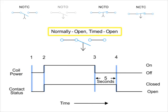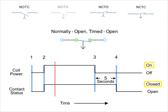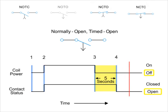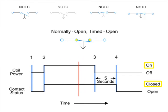Next, we have the normally open, timed open contact. Similar to the normally open, timed closed contact, this type of contact is normally open when the coil is unpowered or de-energized, and closed by the application of power to the relay coil. However, unlike the NOTC contact, the timing action occurs after the coil is de-energized for five seconds. Thus, the contacts close immediately when the coil is energized and open five seconds after the coil is de-energized.